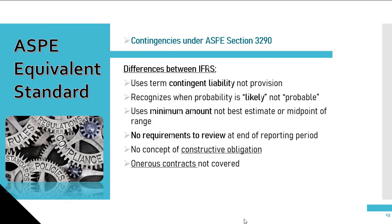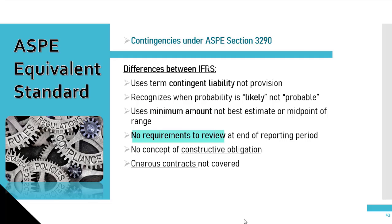Since we've reviewed the standard in IFRS detail, let's review the ASPE equivalent standard. Under ASPE, the following differences exist: the term contingent liability is used opposed to the term provision. A contingent liability is also recognized when the probability of an outflow is likely instead of probable. Instead of taking the best estimate or range for measurement, ASPE uses the minimum amount. There is also no requirement to review contingent liabilities at the end of each reporting period, but instead when conditions have in fact changed. There is also no concept of constructive obligations and onerous contracts in ASPE.